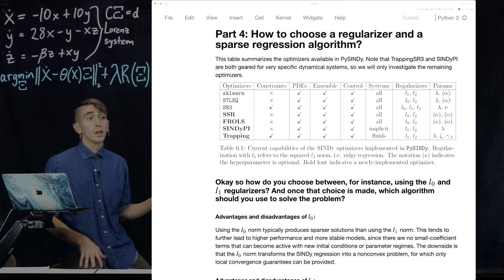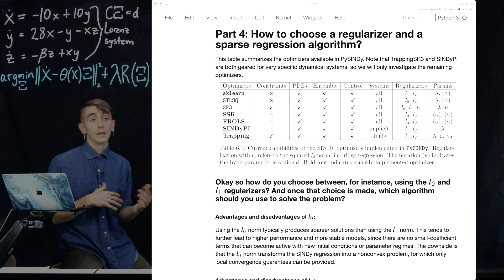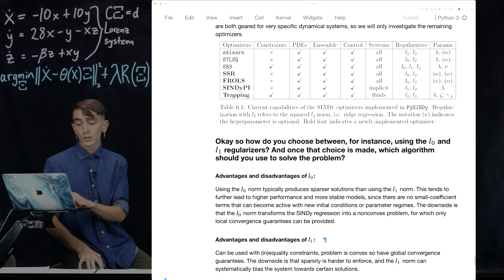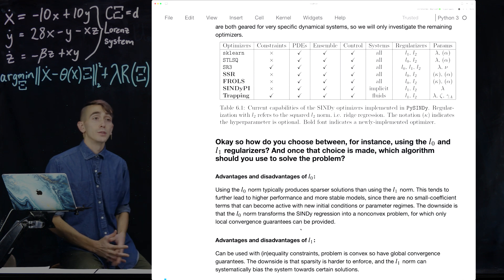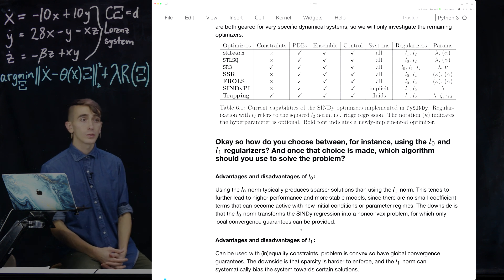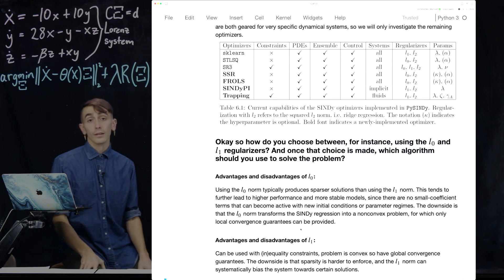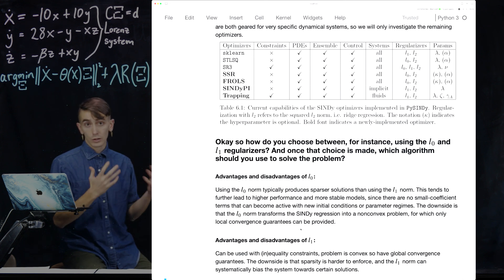And then you might have the question, so how do you actually choose between using a sparse regression algorithm that uses the L0 norm or the L1 norm? And once that choice is made, how do you choose which algorithm you want to use to solve the problem? And I've just written a bit about this. So the advantages and disadvantages of L0. So L0 typically produces sparser solutions than using the L1 norm. This tends to lead to higher performance and more stable models, because there are no small coefficient terms that can become active with new initial conditions or new parameter regimes. The downside is that now the optimization problem here is non-convex, and non-convex problems don't in general have global convergence guarantees. So it's harder to solve these problems.